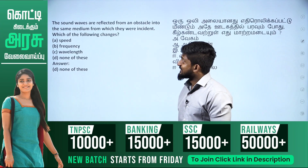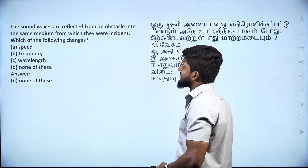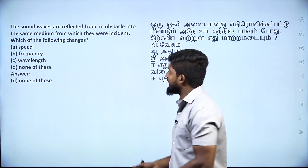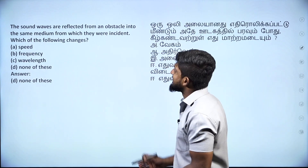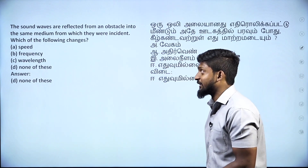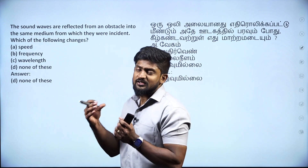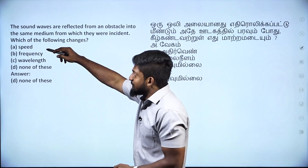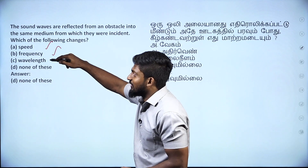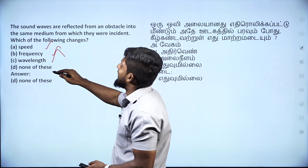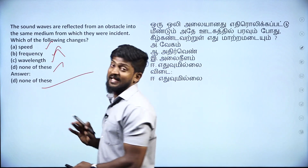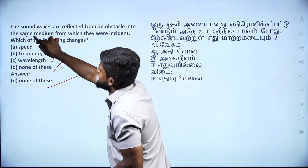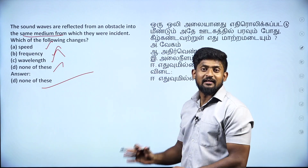Next one: the sound waves are reflected from an obstacle in the same medium from which they were incident. Which of the following changes? The same medium — the same wave will reflect the same way. Changes in speed, frequency, wavelength — none of these. Because it is the same medium, the velocity remains the same.